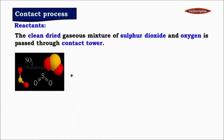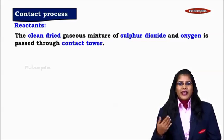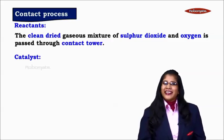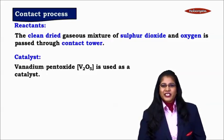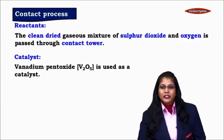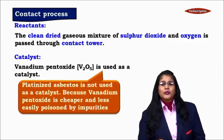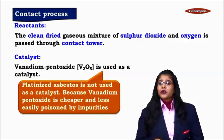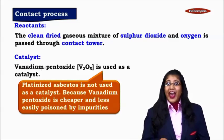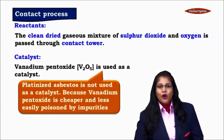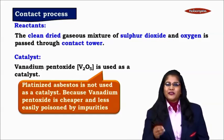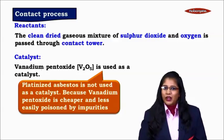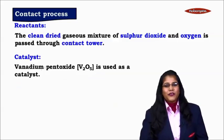SO₂ reacts with O₂ to form SO₃. This reaction is not very feasible and hence we require a catalyst to increase the speed of the reaction. The catalyst which is added is vanadium pentoxide. We can also use platinized asbestos as a catalyst, but it is not preferred. The reason is that vanadium pentoxide is cheaper and it is less easily poisoned by impurities. So even after all that purification, if some amount of impurities are present, they might poison the platinized asbestos, which is rare in the case of vanadium pentoxide.